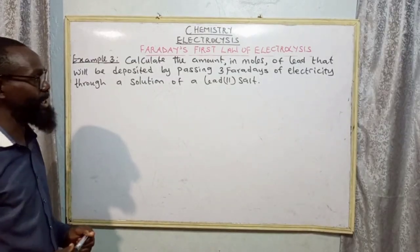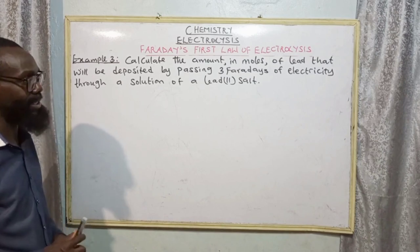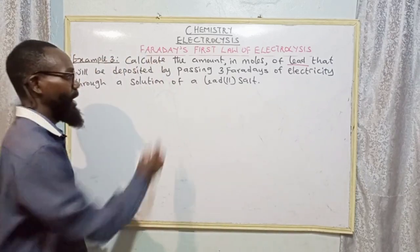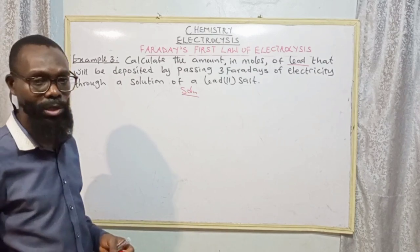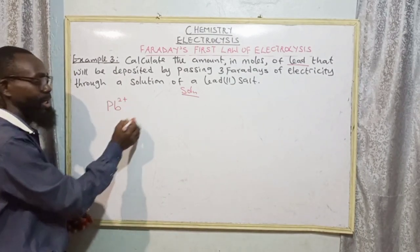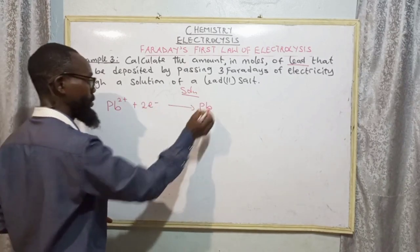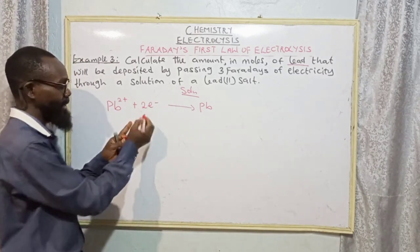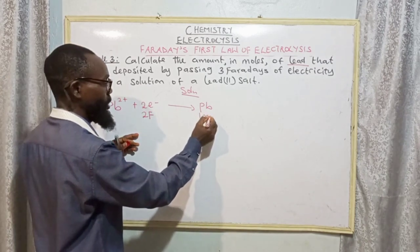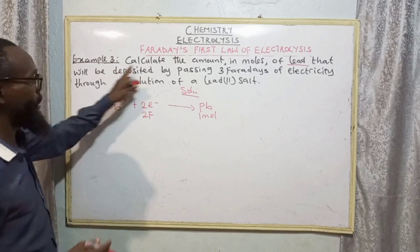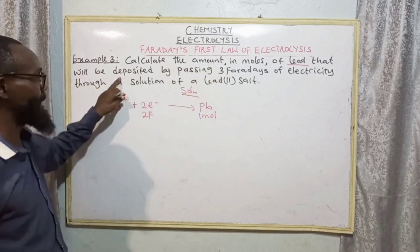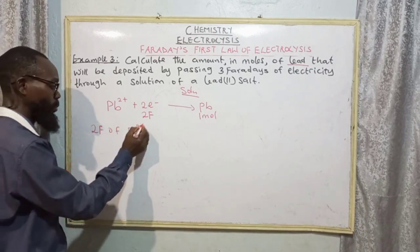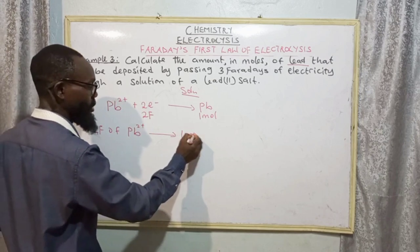Example 3. Calculate the amount in moles of lead that will be deposited by passing 3 Faradays of electricity through a solution of a lead-2 salt. We need to find the number of moles of lead. Lead has a charge of 2+, that is Pb²⁺ is going to accept 2 electrons to deposit Pb. Since we are dealing with Faradays — unlike the previous example where we talked about moles — 2 Faradays of electricity gives us 1 mole of lead.